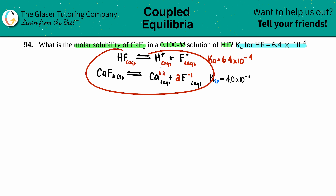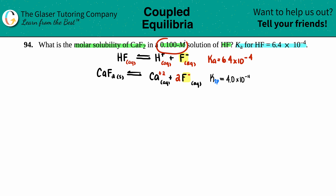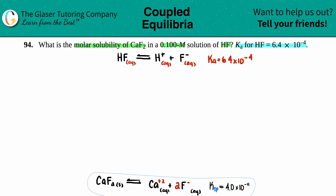What is the similarity between these two balanced equations? They both have F⁻ — fluoride ion. Since they gave us information about HF — specifically that we're in a 0.1 molarity solution — we can use that to find the F⁻ concentration and then plug it into the Ksp equation. It's kind of a piggyback question. So we'll work with the HF equation first and bring the calcium equation in later.